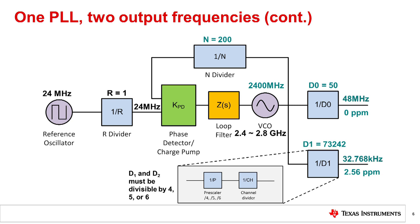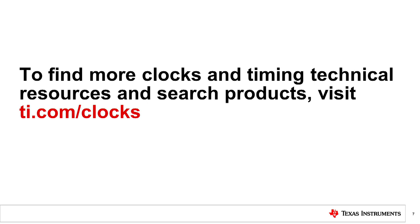For more discussion on frequency planning and how to minimize spurs and crosstalk, look for our next training module, Frequency Planning Part 2. To find more technical information and to search products, visit ti.com/clocks. Please try our short four-question quiz to check your understanding of this video's content.